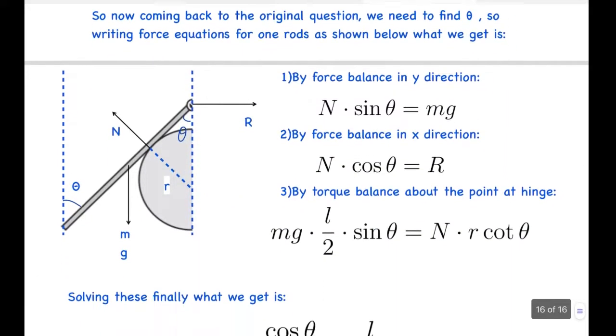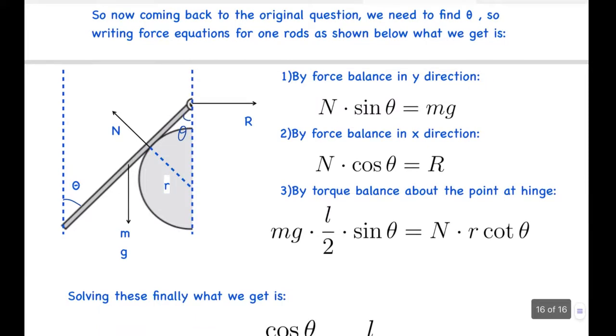Now coming back to the original question, we needed to find theta. So let's write the force equations for one of the rods as shown in the figure. Here we have considered one rod, the normal force will be acting in the perpendicular direction to the surface, Mg force downwards, and the reaction force R is acting in the horizontal direction.